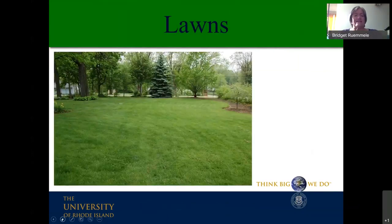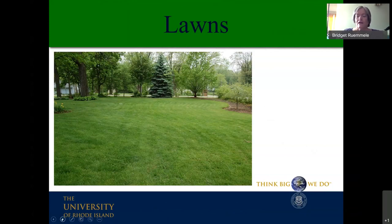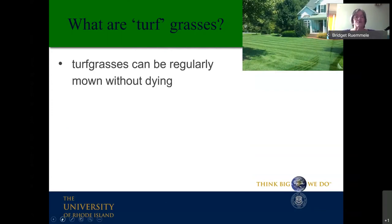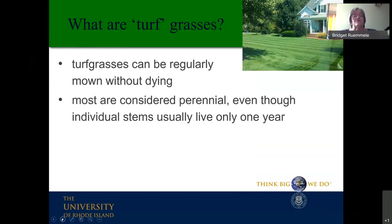Thank you, Kate. It's nice to have everybody here. We're going to talk about lawns and easy ways to take care of them. The first question people have is: what do I use for my lawn? Turfgrasses are a certain group of grasses that can be regularly mown without being killed — they will continue to grow even after being repeatedly mown. Most turfgrasses are considered perennial, even though individual grass stems usually only live about one year.